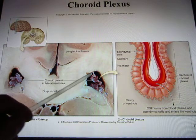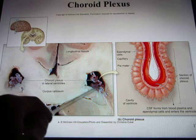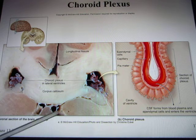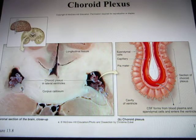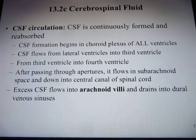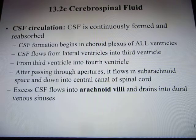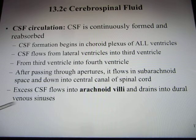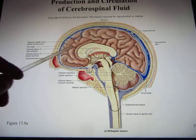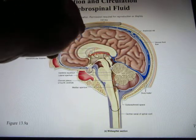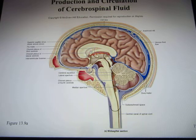The ependymal cells in the choroid plexus produce CSF, and the CSF flows through the ventricle system. Eventually it drains into the arachnoid villi and into the dural venous sinus, and from there goes back into your body's blood circulation.